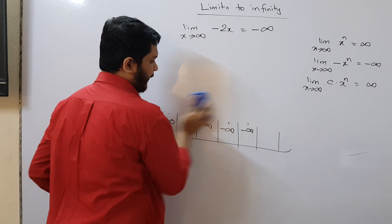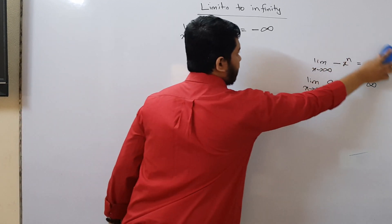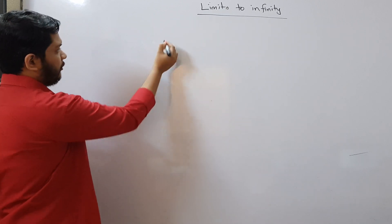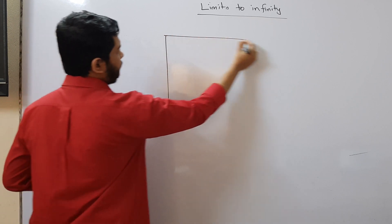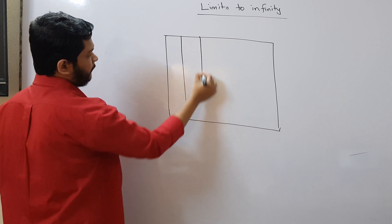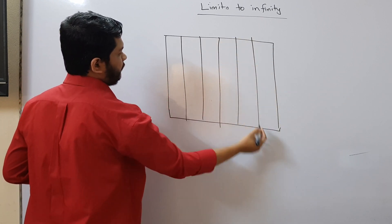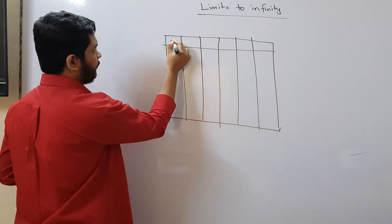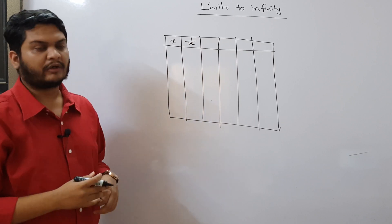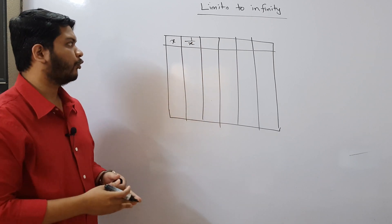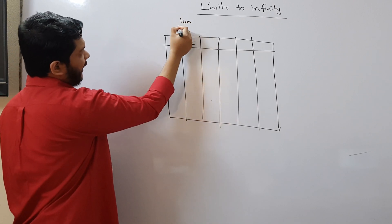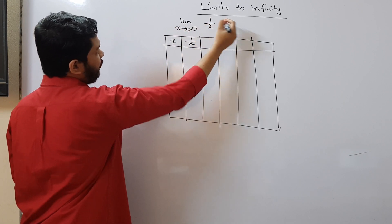Now we will look into reciprocals. If the value of the variable increases towards infinity, what happens to these expressions? Let me write: limit x tends to infinity of 1 divided by x.